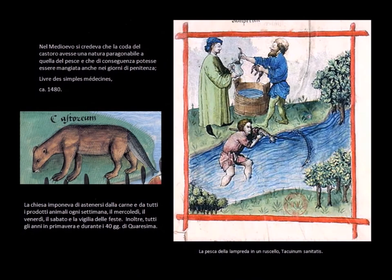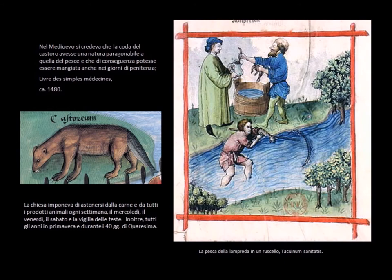La chiesa con i suoi calendari liturgici influenzava notevolmente le abitudini alimentari. Il consumo di carne era proibito ai cristiani per un buon terzo dell'anno, e tutti i cibi di origine animale, tra cui le uova e i latticini — ma non il pesce — erano generalmente proibiti durante la quaresima e i digiuni. Sia la chiesa occidentale sia quella orientale decretarono che i periodi di festa dovessero essere alternati ad altri di digiuno, per mortificare il corpo e rafforzare l'anima. Durante i giorni di digiuno particolarmente rigido, il numero dei pasti giornalieri si riduceva a uno.